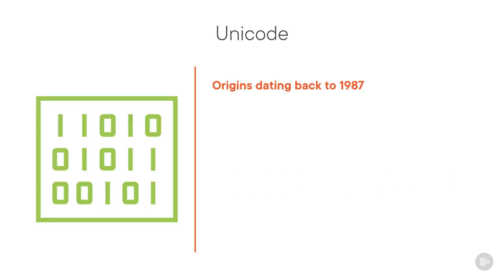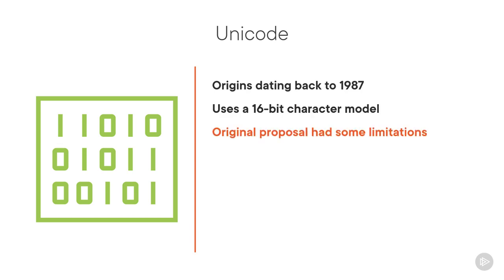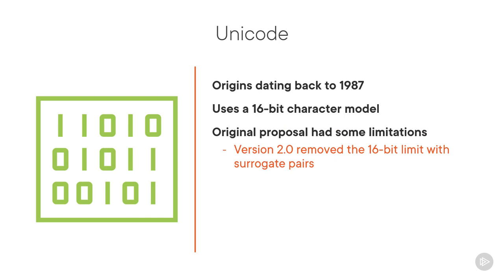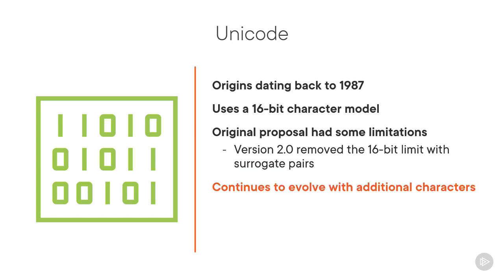Unicode dates to 1987, and uses a 16-bit character model to address the need for reliable worldwide text encoding. The original proposal was intended to be sufficient for encoding every language, but it had some limitations. In 1996, the specification was updated and version 2.0 removed the 16-bit limit through a mechanism known as surrogate pairs. This allowed historical scripts and many rarely used characters to be encoded. Unicode continues to evolve, with new versions adding support for characters from additional languages, and in more recent years, the frequently used emoji characters.